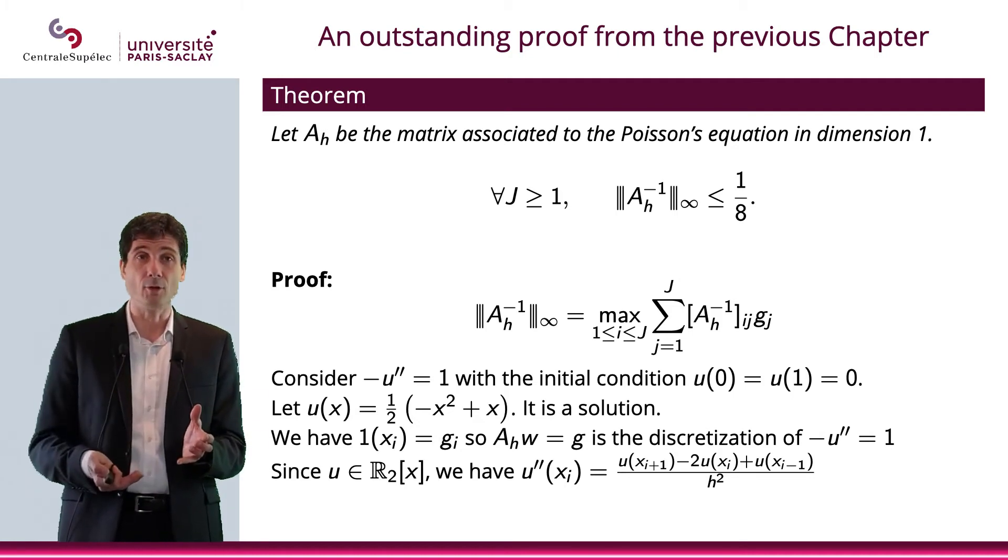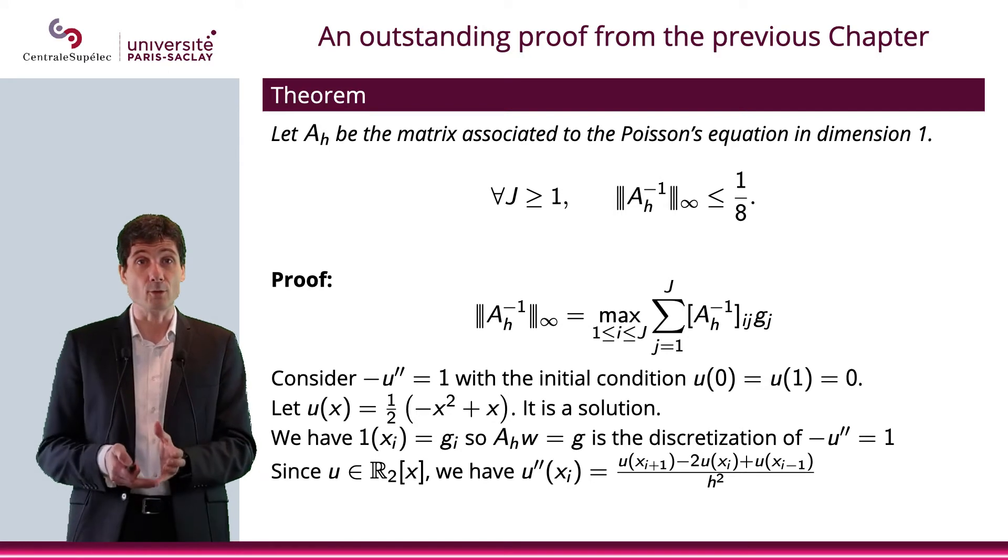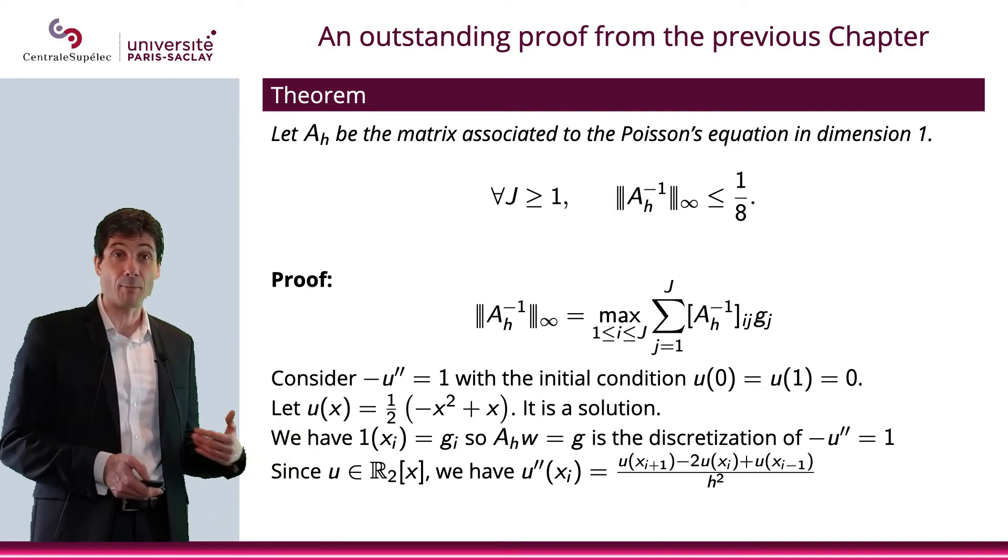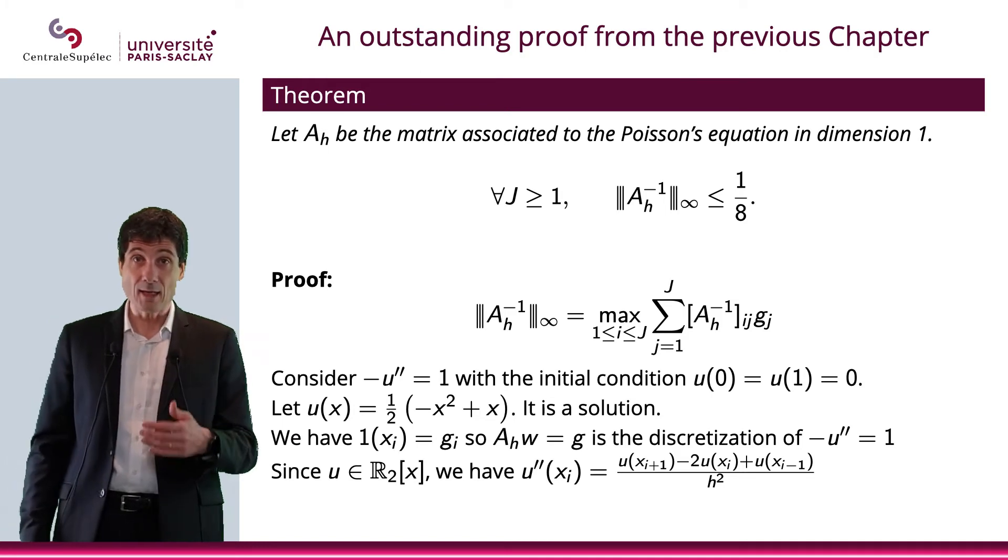So if you have a second-degree polynomial or even a third-degree polynomial, then obviously that term will be equal to zero. So that's why we actually have an equality. It's not an approximation. It's really an equality.